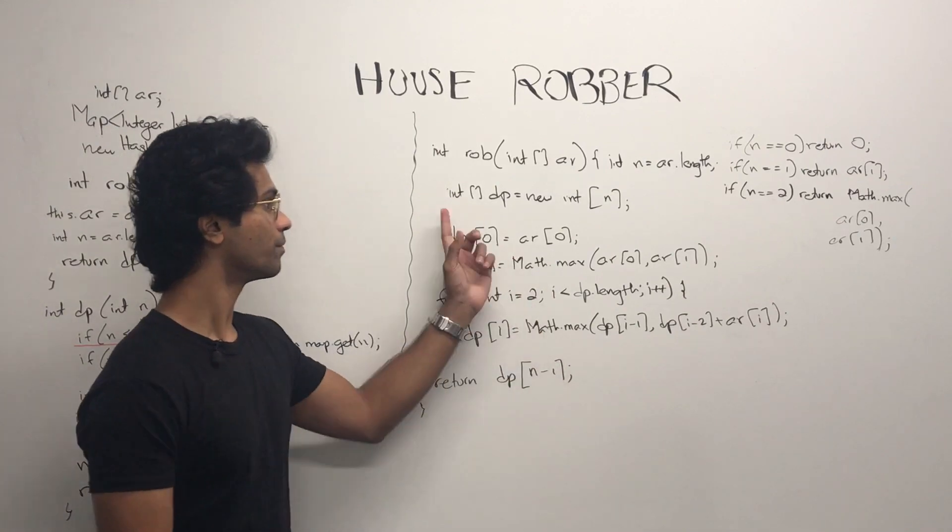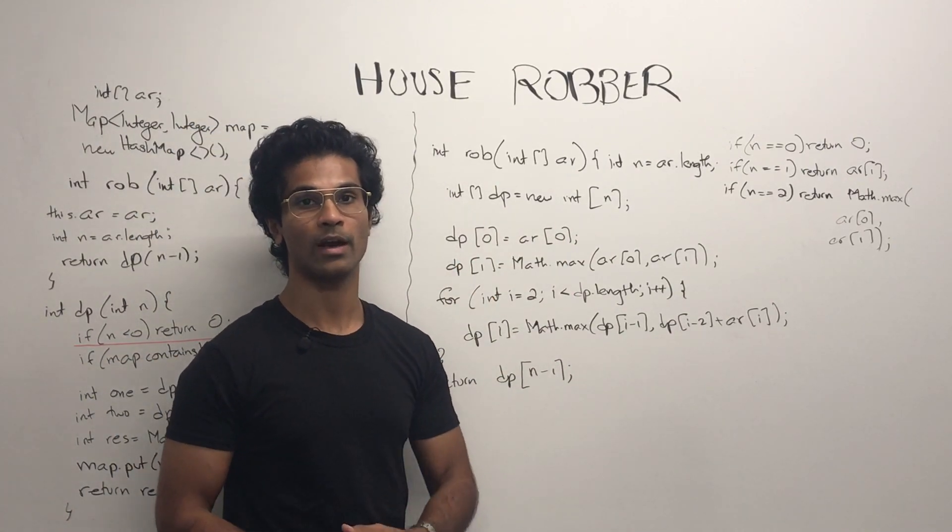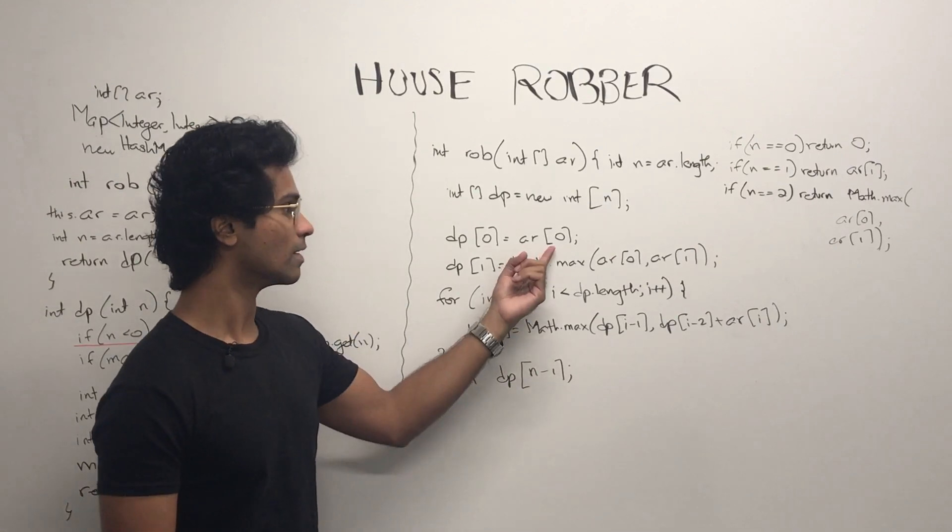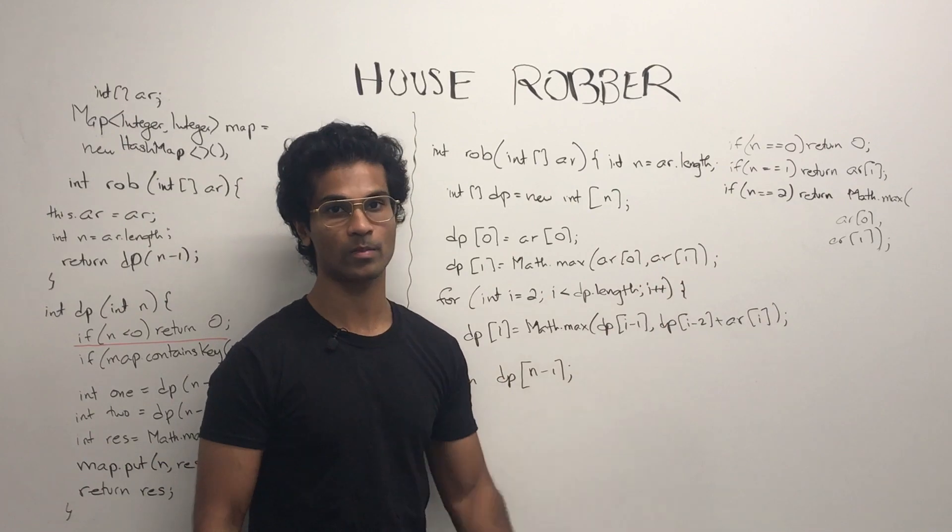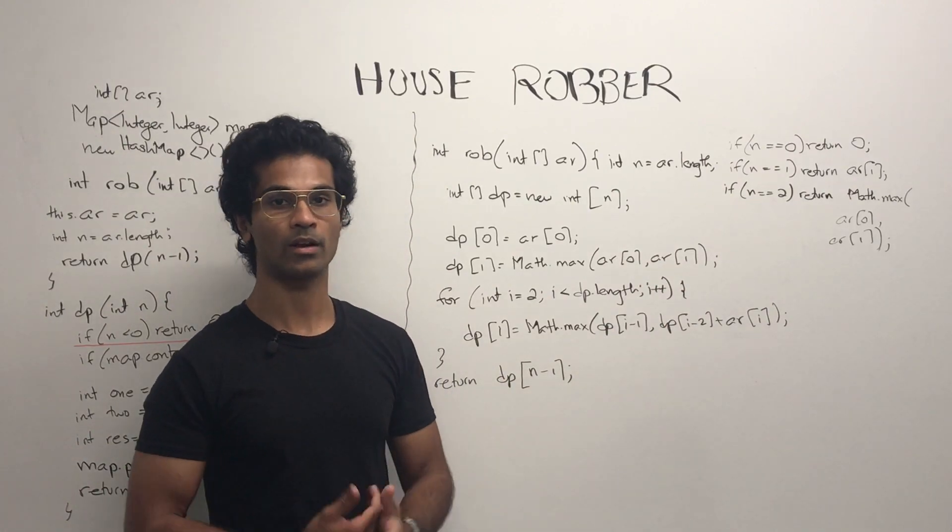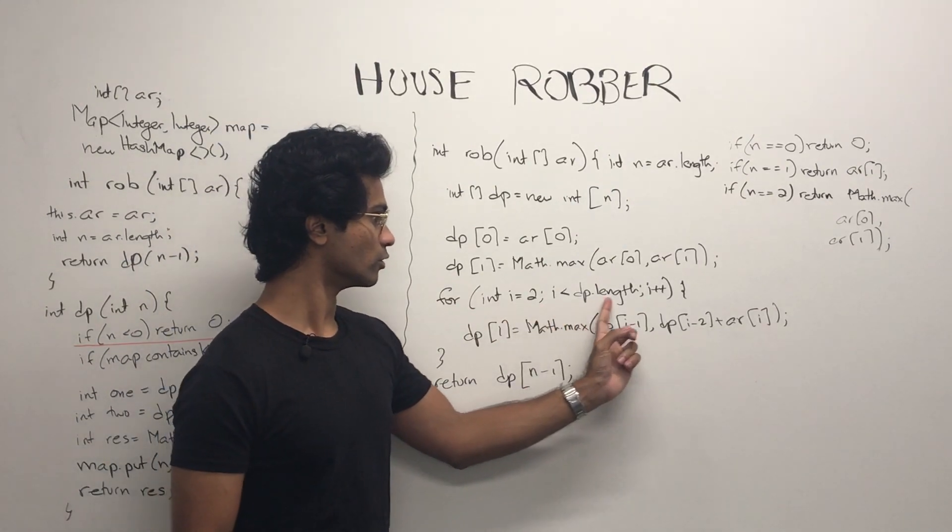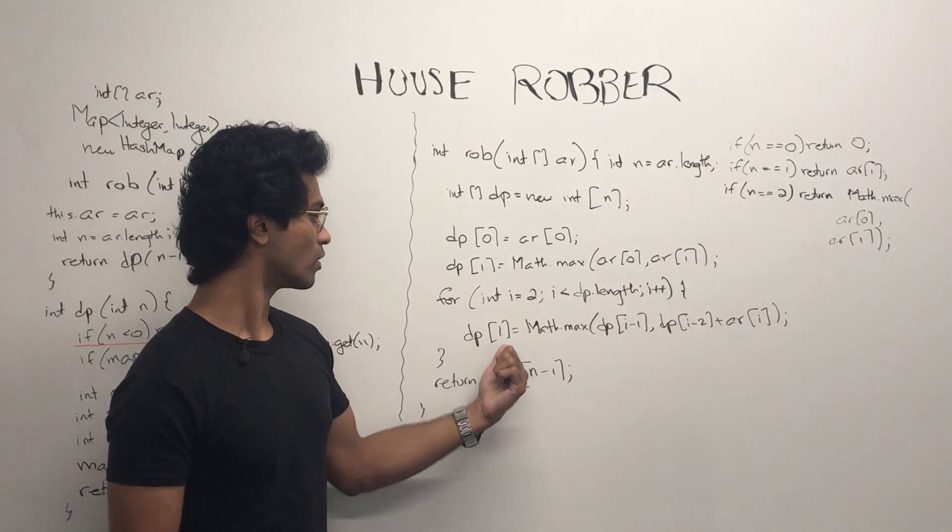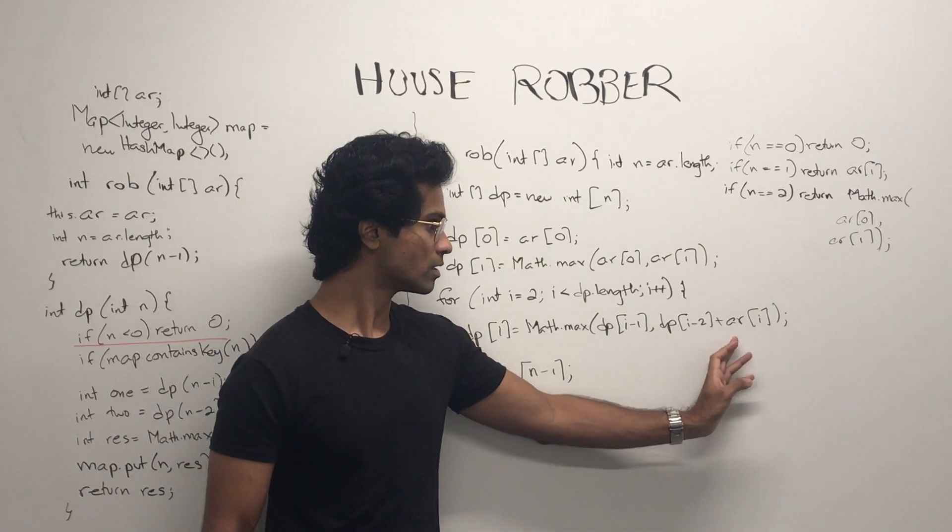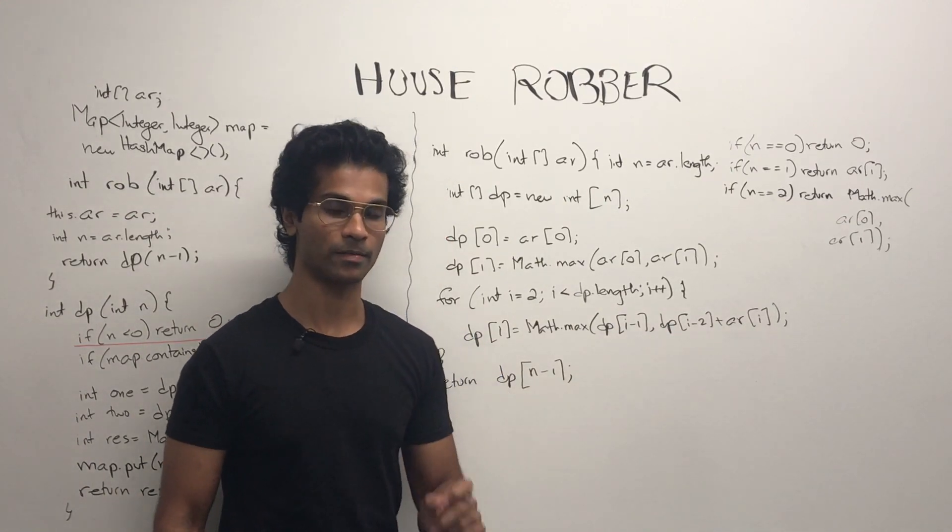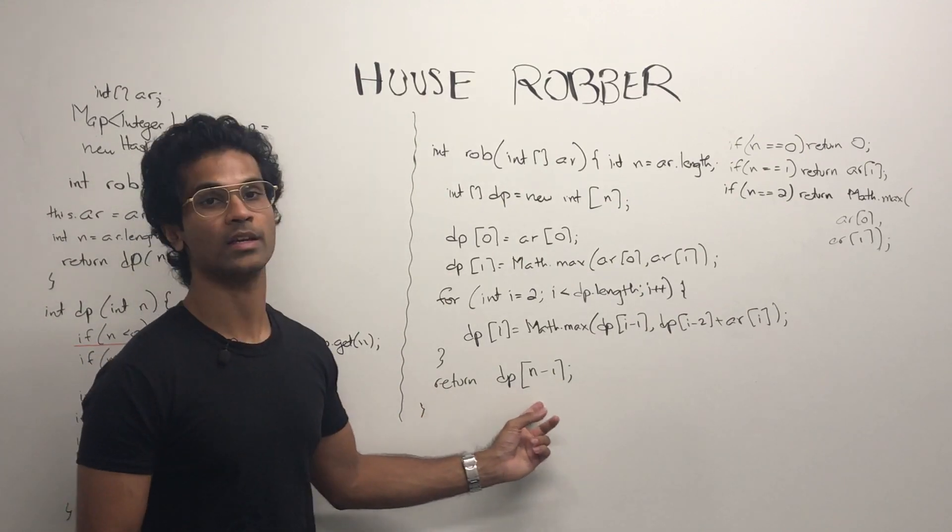Otherwise, we initialize a dp table, initialize the first two. So if we have only one element, we're just going to put it in there. If we have the second element, we're going to just take the maximum of the first two, then we can begin our DAG. So we initialize our loop, and at each stage, all we do is we ask for i minus 1 or i minus 2 plus the number that we're currently visiting. Ultimately this is going to fill up the table, and we just return dp of n minus 1.